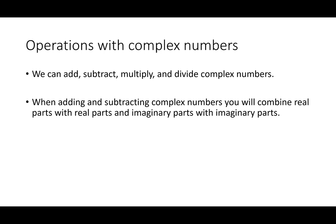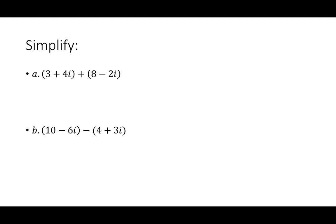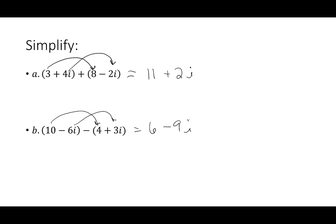When we add and subtract complex numbers, combine the real part with the real part and the imaginary part with the imaginary part. For 3 plus 4i plus 8 minus 2i: real parts give 3 plus 8 equals 11, imaginary parts give 4i minus 2i equals 2i, so the answer is 11 plus 2i. For 10 minus 6i minus 4 plus 3i: 10 minus 4 is 6, and negative 6i minus 3i is minus 9i. Be careful with signs — distribute the negative first if needed, then combine pieces.